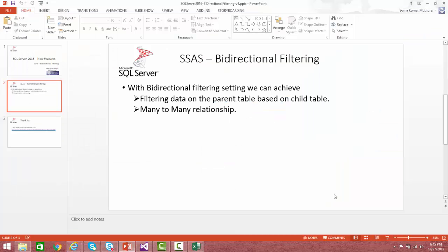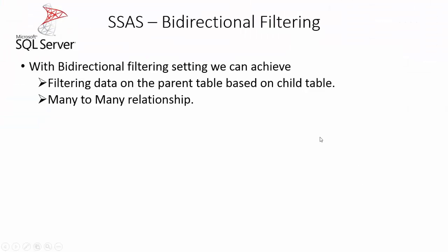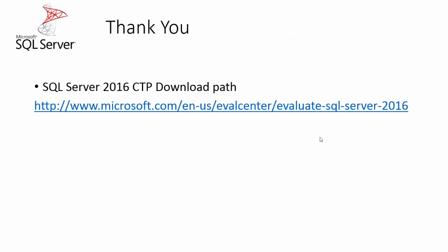That is the bi-directional filtering feature, which has been made available in the CTP 3.2 version. Presently, SQL Server 2016 is in CTP 3.2 and can be downloaded from the provided link. Thank you very much for watching this video. I will meet you all soon in my next video. Thank you.